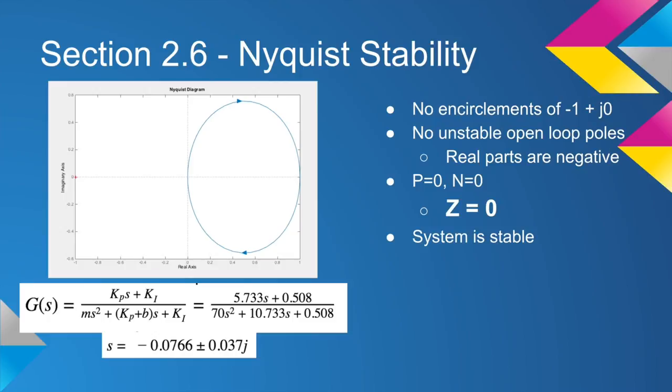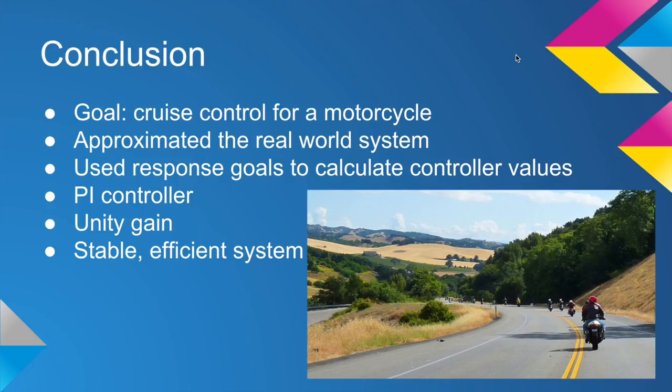Our objective in this project was to create a controller that can efficiently and accurately control the speed of a motorcycle. We approximated the real world system, used desired response goals to calculate controller values for our proportional integral controller, used the unity gain feedback loop, and ended up with a stable, efficient system that can accurately modulate the speed of a motorcycle.